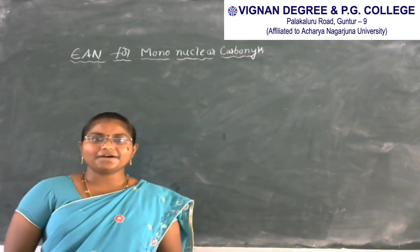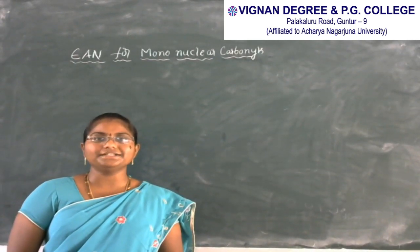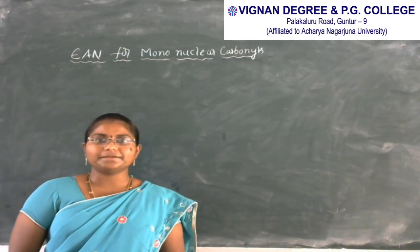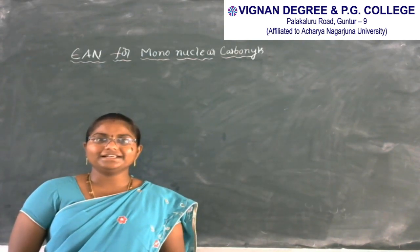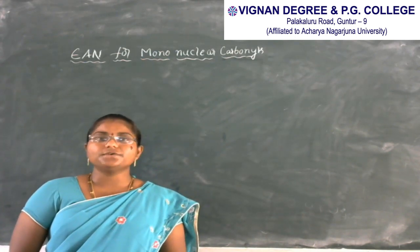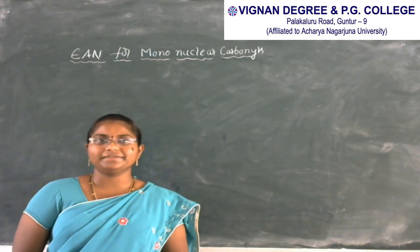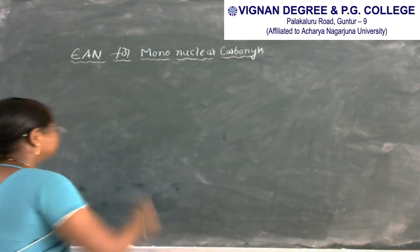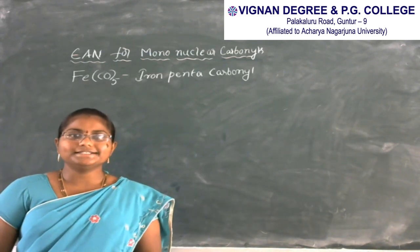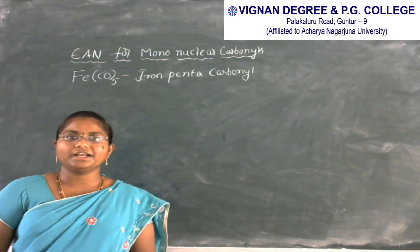Today we discussed about EAN for mononuclear carbonyls. We already discussed about nickel tetracarbonyl. In this class, we discussed about iron pentacarbonyl and how we calculate EAN for iron pentacarbonyl. This is another example for mononuclear carbonyls.